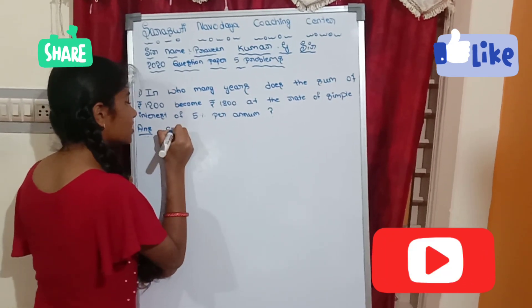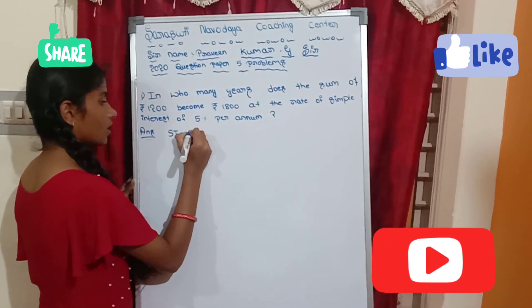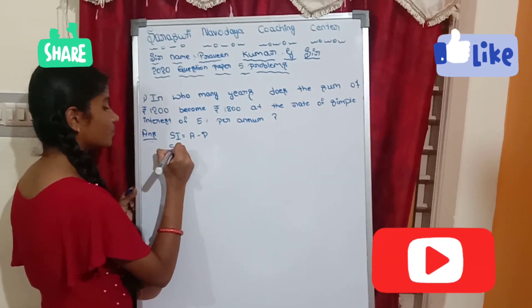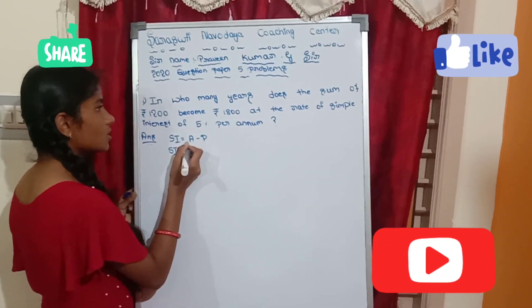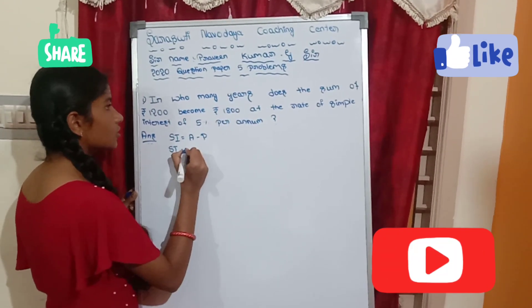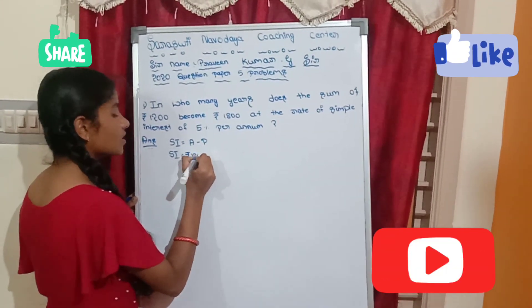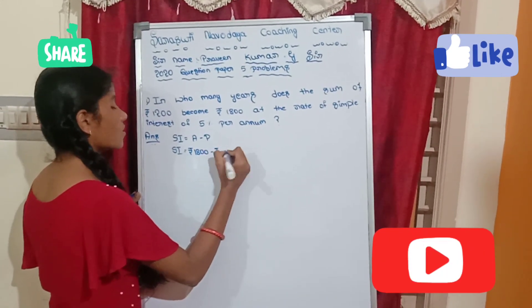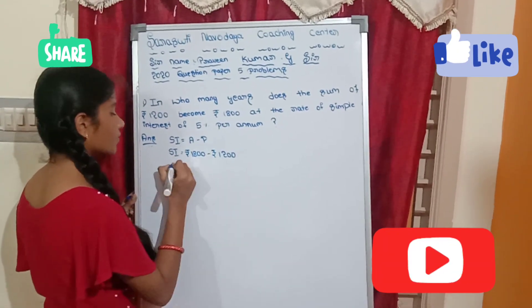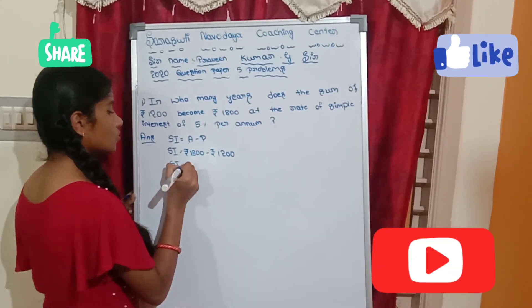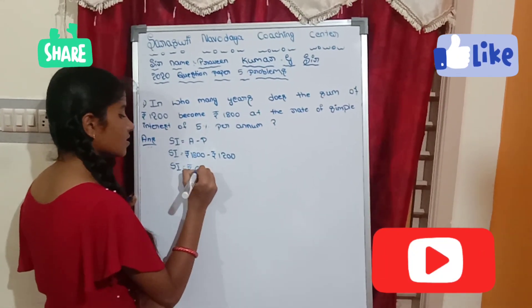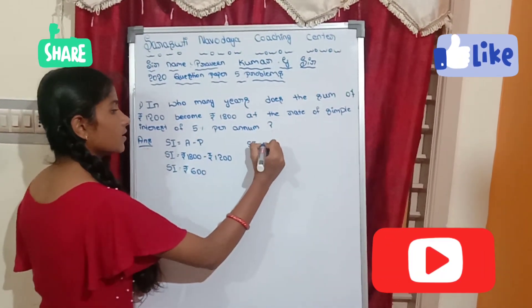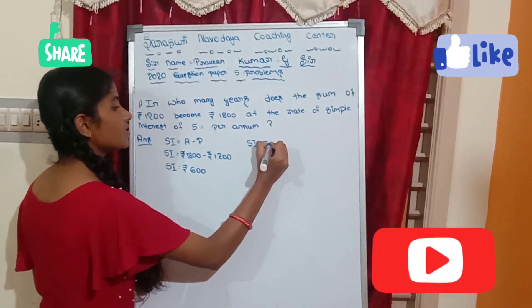First, SI is equal to Amount minus Principal. SI is equal to rupees 1800 minus rupees 1200. SI is equal to rupees 600.